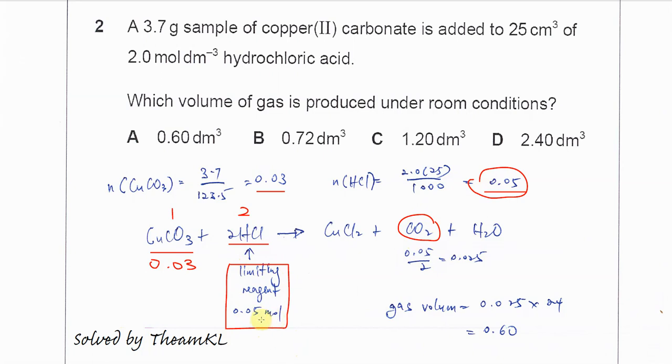Since the limiting agent is 0.05 moles used and two moles of HCl will form one mole of CO2, it's 0.05 over 2, so it's half, and the moles of CO2 formed is 0.025.